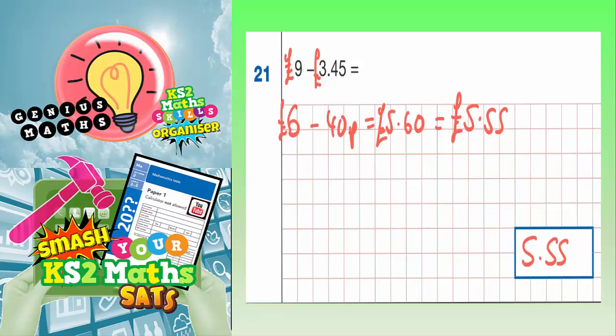The other way of doing it is to use a column method. So remember, this 9 is basically the same as 9.0. And 3.45 is the same as, obviously, 3.45.